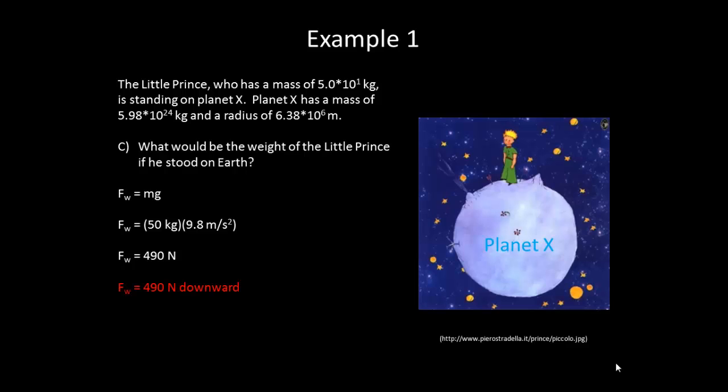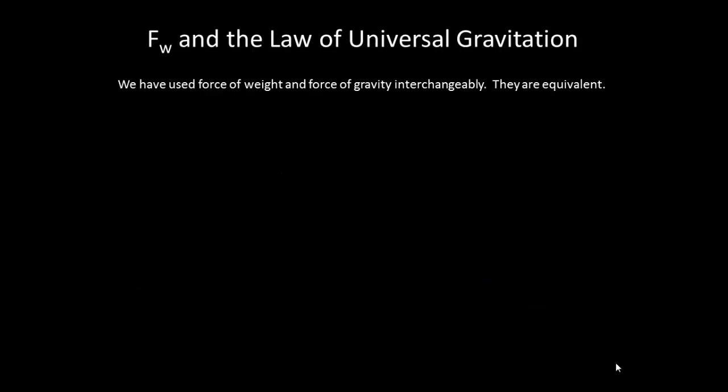490 newtons downward? That sounds a little familiar. Hmm. Well, we must have done something similar to what's on Earth. And in fact, surprisingly so, planet X has the same mass and radius of our own planet Earth. So, we've been using the force of weight and force of gravity interchangeably. They are equivalent.